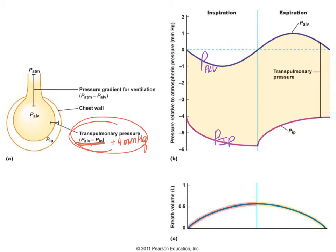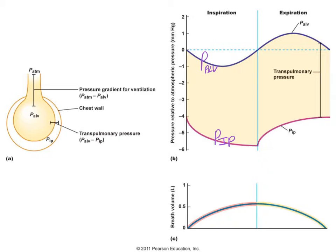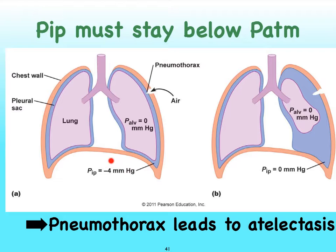That transpulmonary pressure of plus four millimeters of mercury is what ensures there's distension in the alveoli and that the lungs stay distended and do not collapse. This negative four millimeters of mercury compared to atmospheric pressure is absolutely crucial. We also see that we move about half a liter of air, or 500 mL, at rest. The intrapleural pressure must always be about four millimeters of mercury less than the pressure inside the alveoli and in the atmosphere.